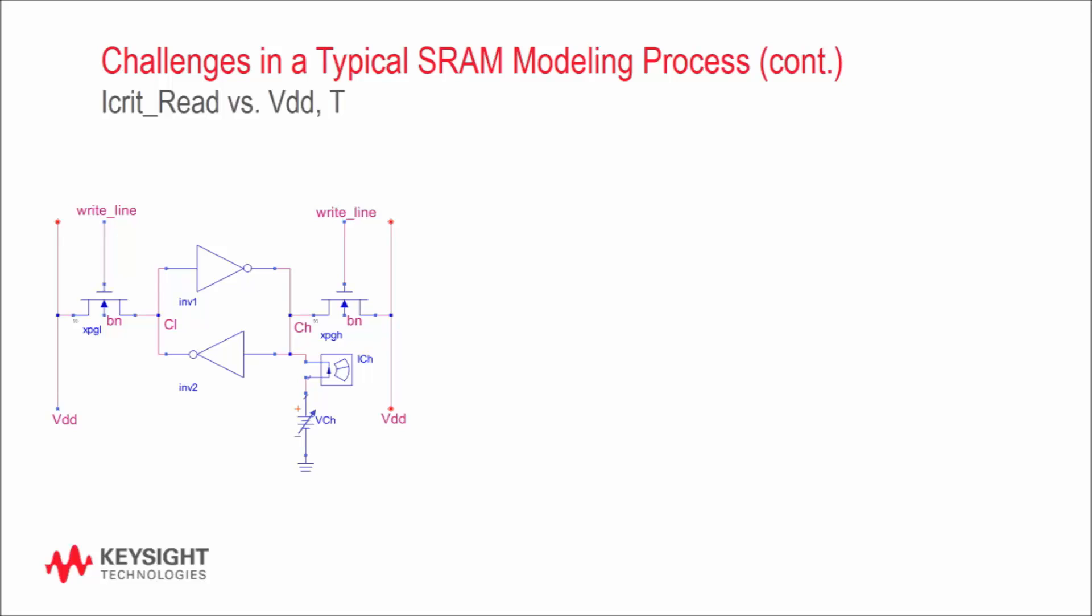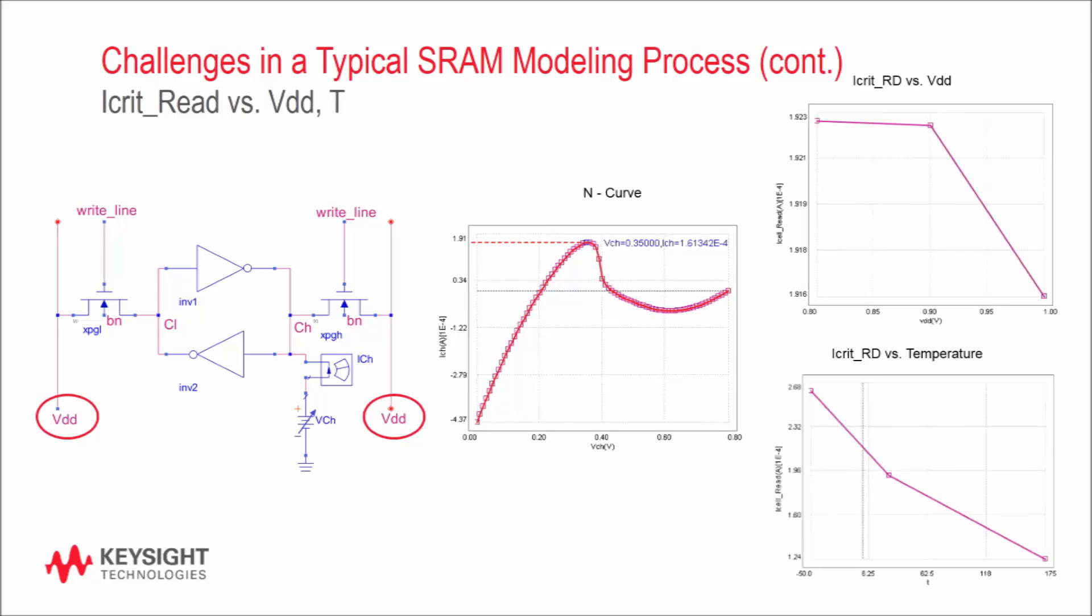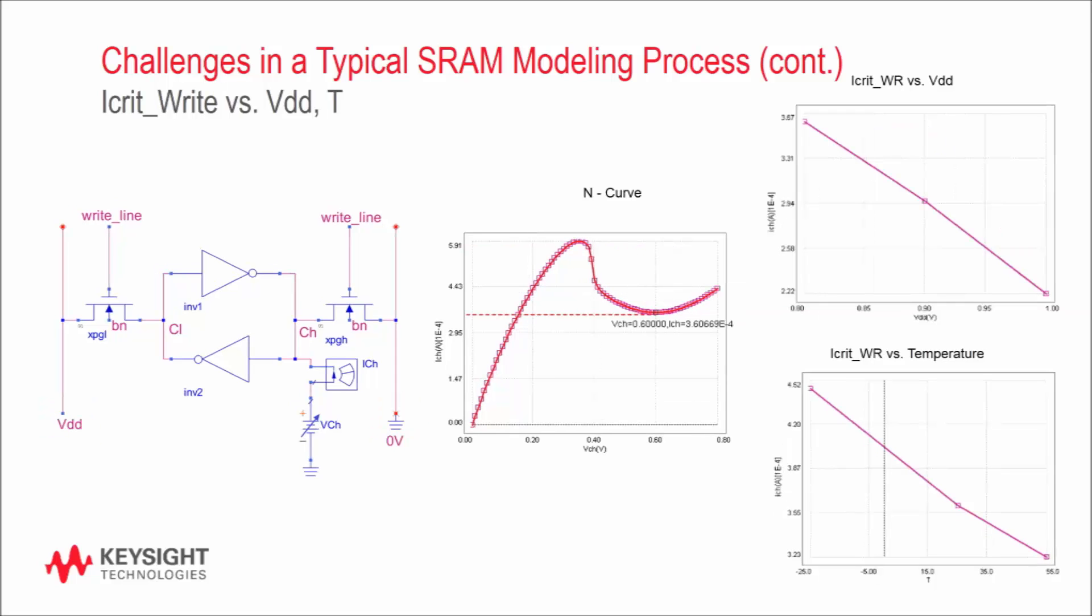Another very useful figure of merit is the critical read or write current. For the critical read current, we apply VDD to both bit lines and sweep the voltage at CH while observing the current at that node. A quick plot reveals the so-called N-curve, which is shown here in the middle. The critical read current is defined as the peak value on the N-curve. MBP displays this peak in real-time as a function of model simulation. As you can see here on the right, we often plot this peak value as a function of VDD and temperature.